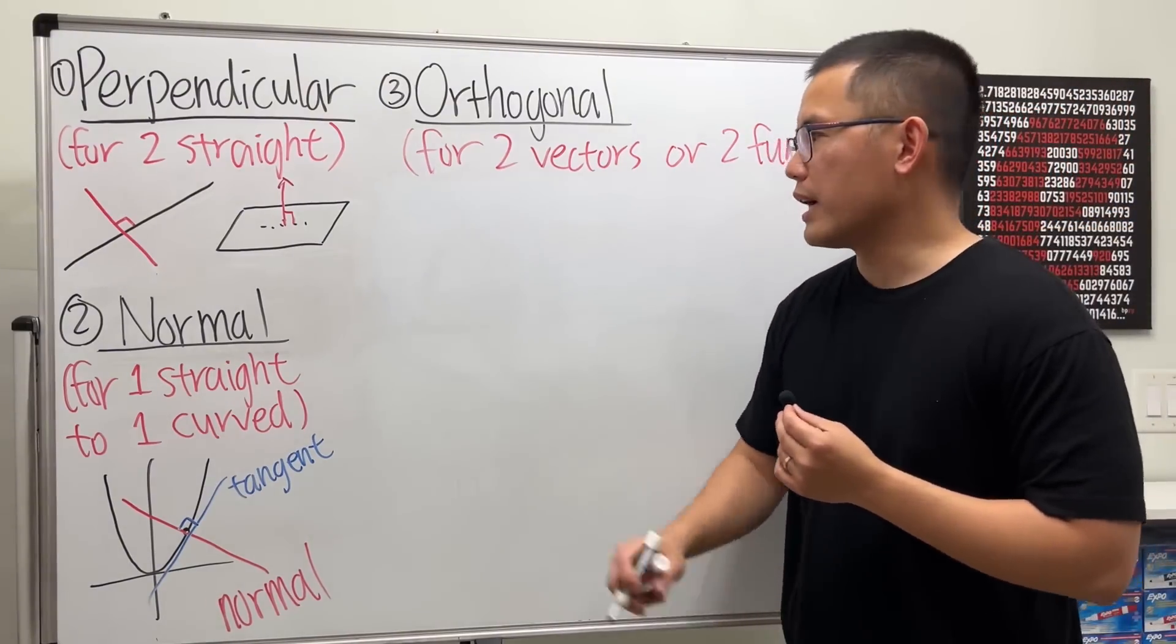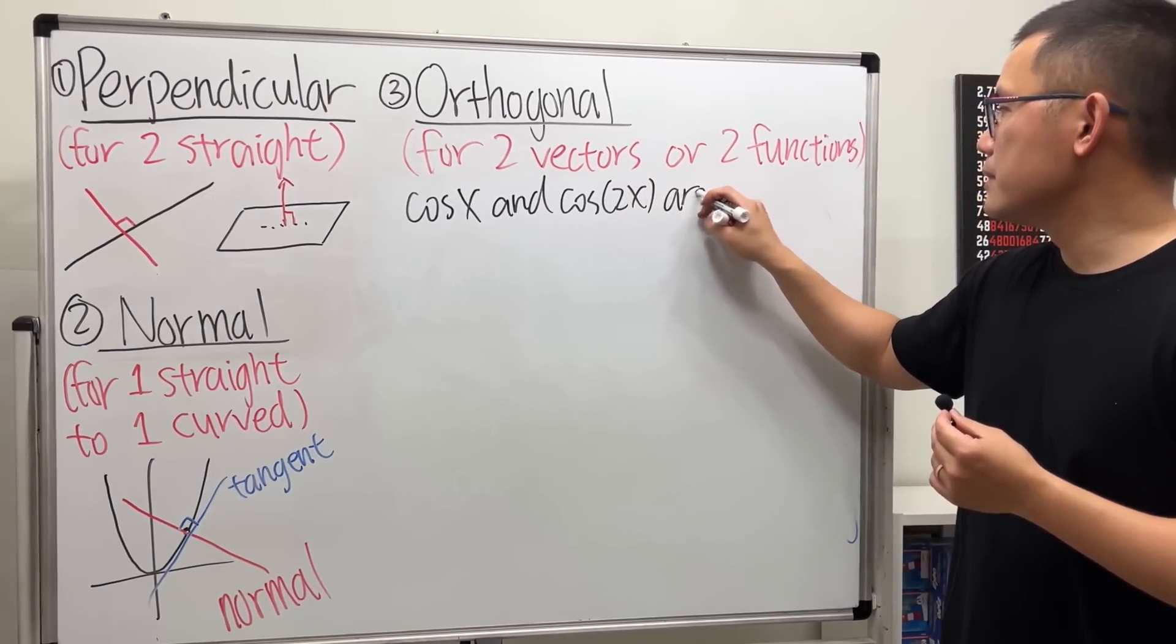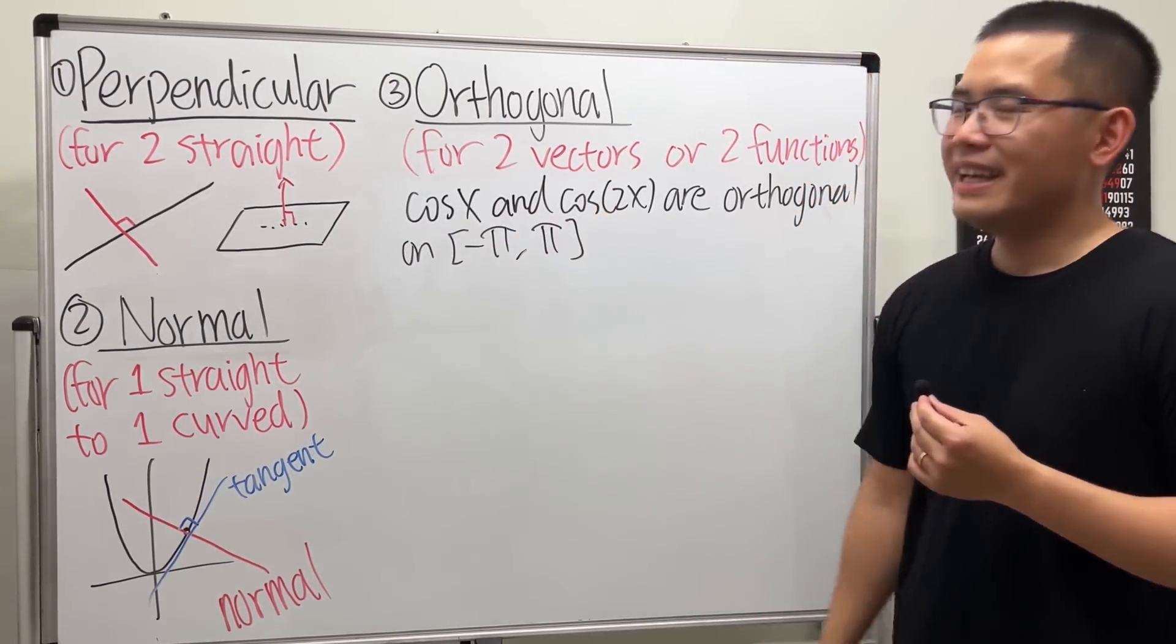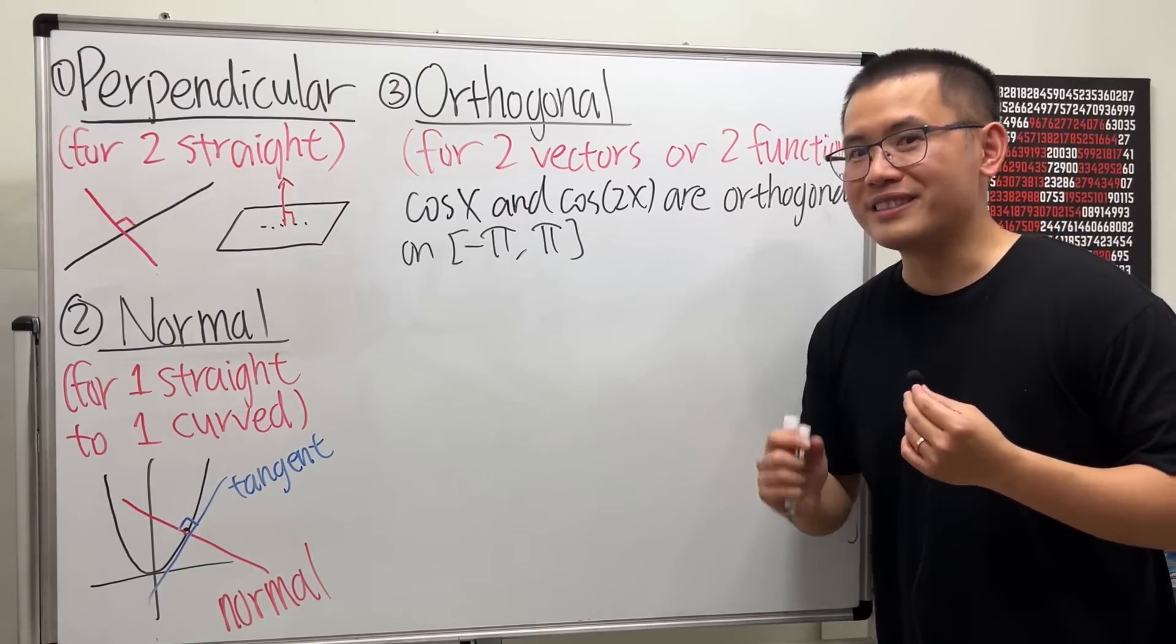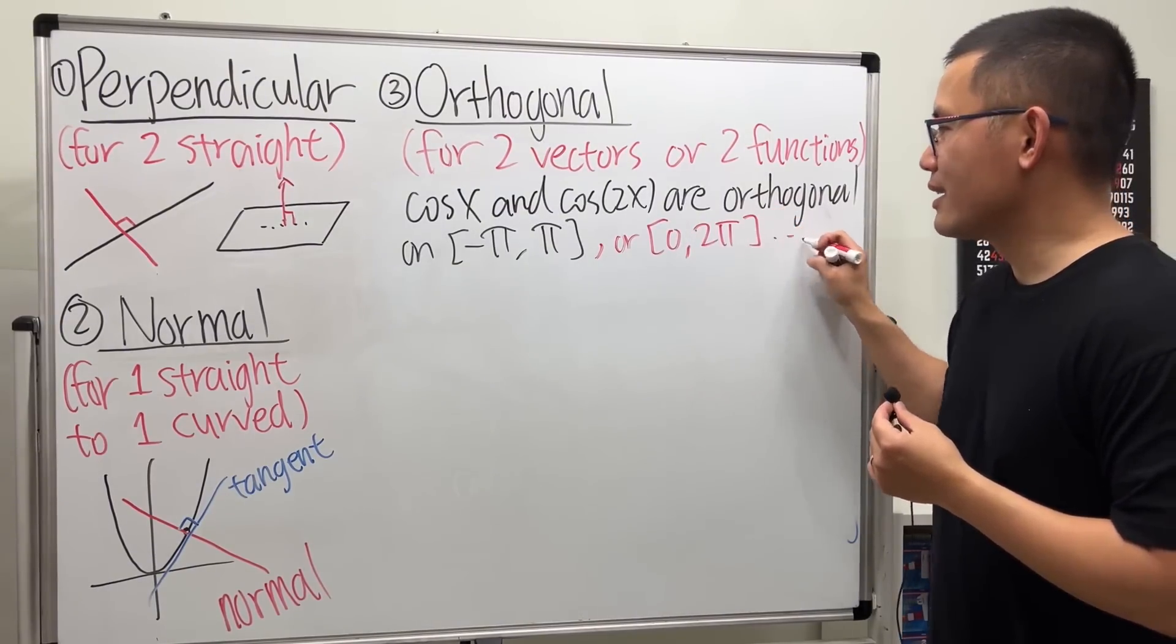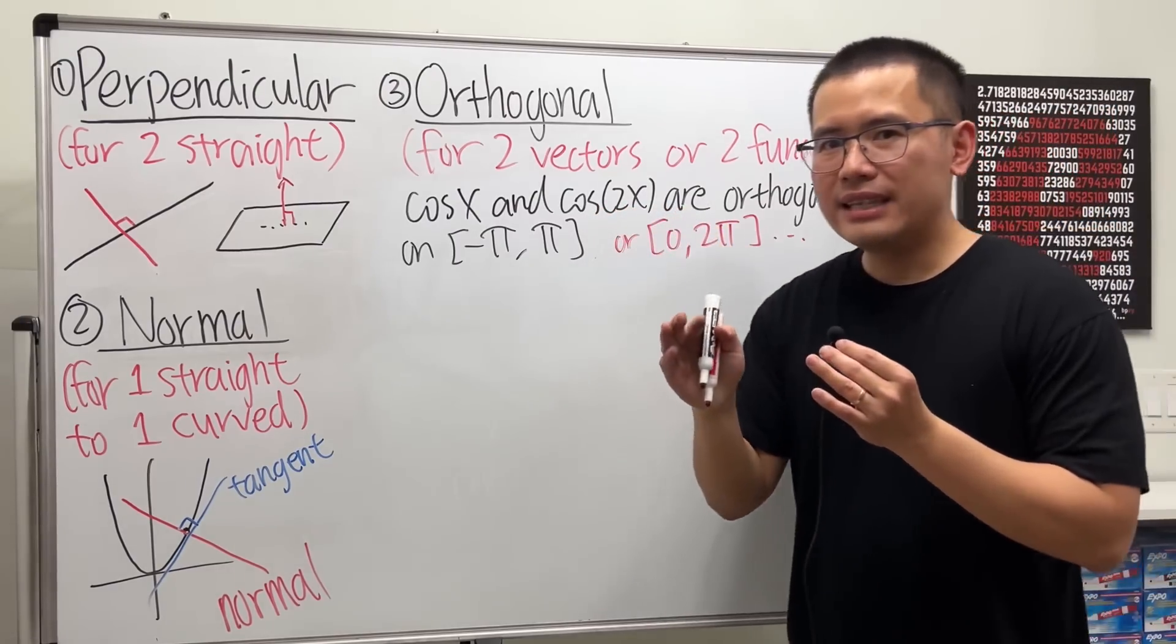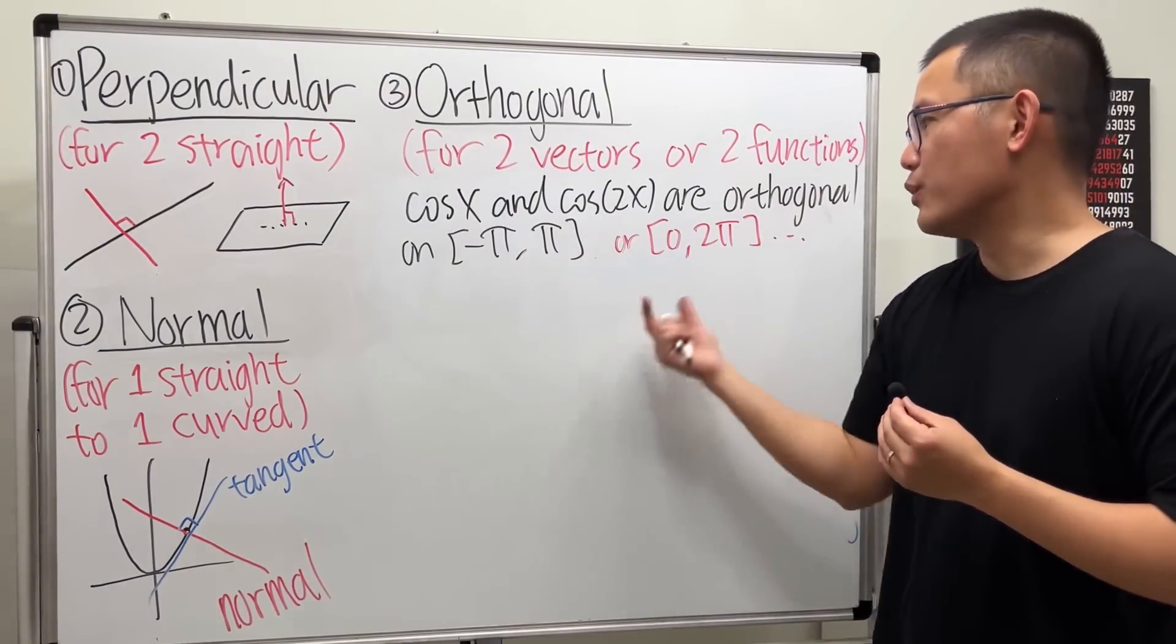Here's a quick example for you. I will tell you cos(x) and cos(2x) are orthogonal, and I will tell you an interval. Let's use -π to π. And maybe some of you recognize this example already. Yes, this is from doing the Fourier series. So in fact, you can also do it on 0 to 2π, and so on. But let's just focus on -π to π. And in fact, you can have any cos(mx) and cos(nx). As long as m and n are integers that are different, then this and that will be orthogonal on this interval or that interval.